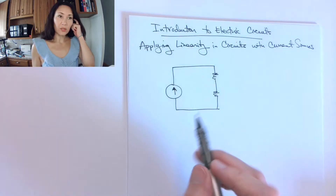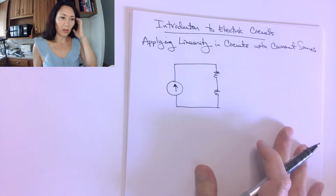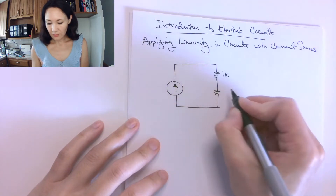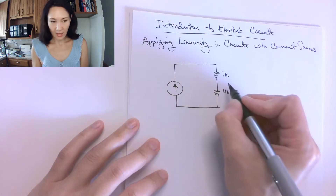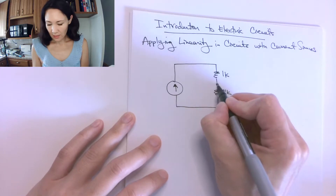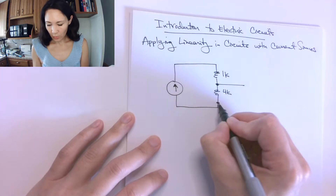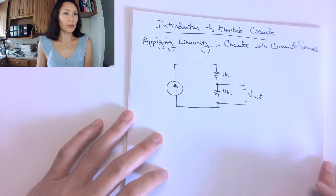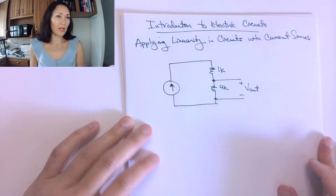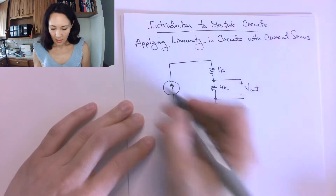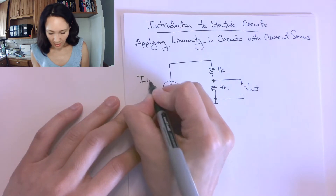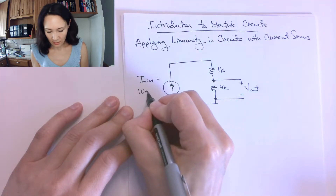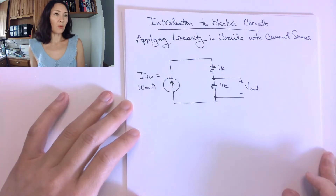Instead of a voltage source, I'm going to replace it with a current source. Let's let this be 1k and this can be 4k. We'll designate this as our output resistor, so we're interested in the voltage drop across it — we'll call it Vout. And let's call this Iin and give it a value of 10 milliamps.